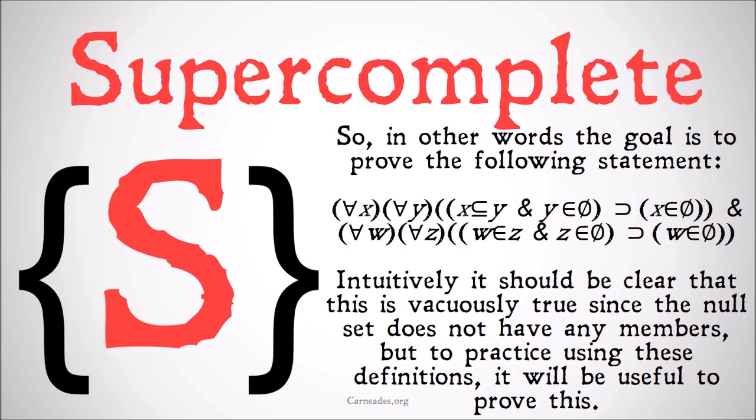So, in other words, the goal is to prove the following statement. For all x and all y, x is a subclass of y and y is a member of the null set implies that x is a member of the null set. And for all w and all z, w is a member of z and z is a member of the null set implies that w is a member of the null set. Intuitively, it should be clear that this is vacuously true, since the null set doesn't have any members. But to practice using these definitions, it's going to be useful to prove this.